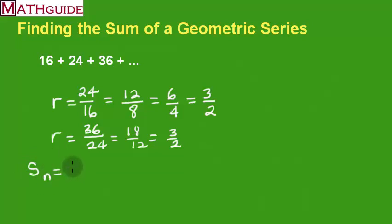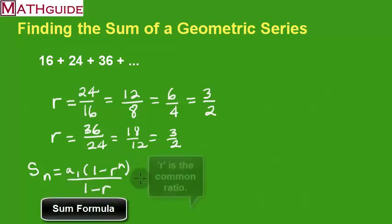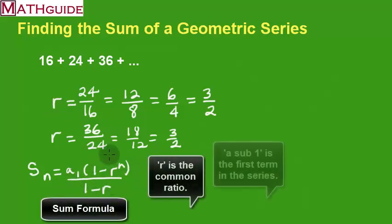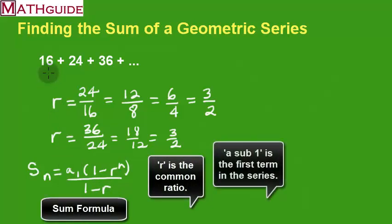That's an n, and it says a1, then there's 1 minus r to the n, and you have 1 minus r. r is the common ratio. a1 is just the first term. This is a1, first term.